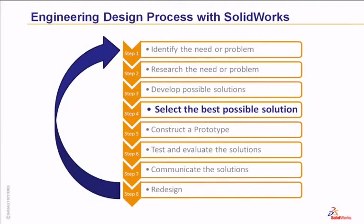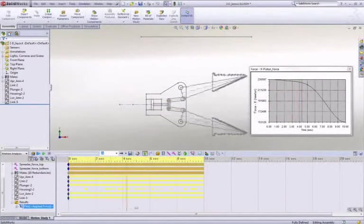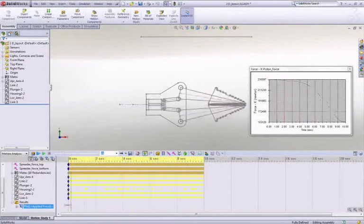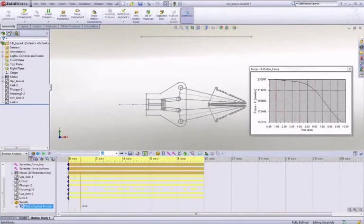Step 4 is to select the best possible solutions. You can use several different decision-making methods to justify a particular design. One example is systematic decision making where two choices are compared and the advantages and disadvantages are evaluated. Another is computational decision making where the importance of certain criteria is ranked and compared. You can obtain quantitative and qualitative data about your design from SOLIDWORKS coupled with a decision-making method to make educated judgments on which is the best design.